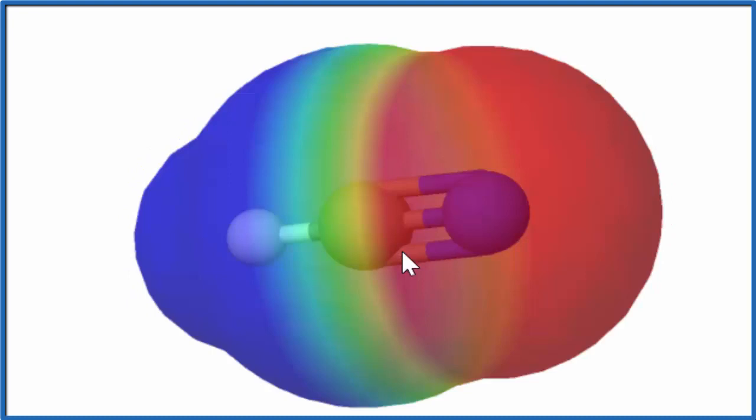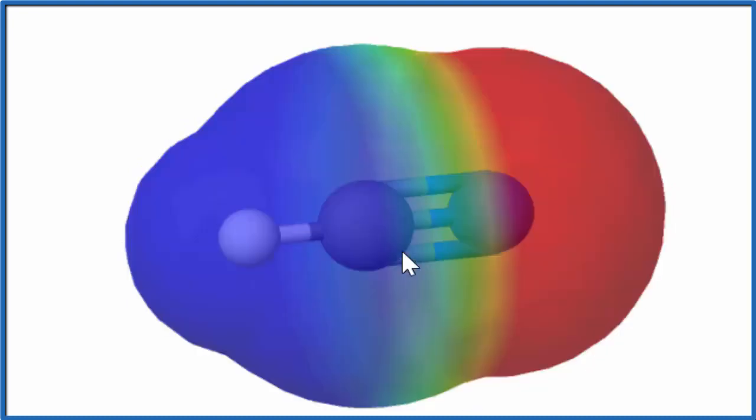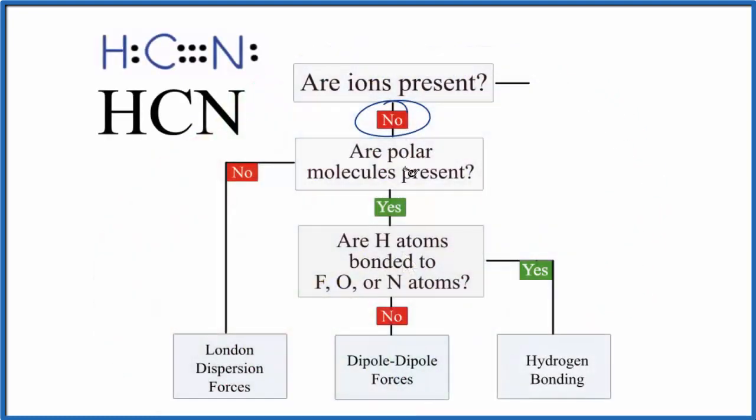So this is a polar molecule. If you had two hydrogen cyanide molecules together, they would be attractive. Let's go back. So we do have polar molecules present. Yes, so we go down.